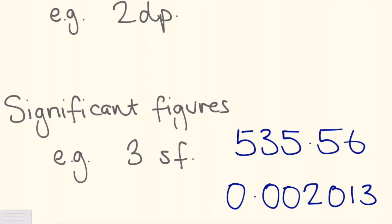The other thing you need to know about when rounding numbers is significant figures. A question might ask you, for example, to round off to three significant figures. So let's have a look at these two examples. My first number is 535.56. So what is the first significant figure? Well, it's the first number starting from the left that is not a zero.